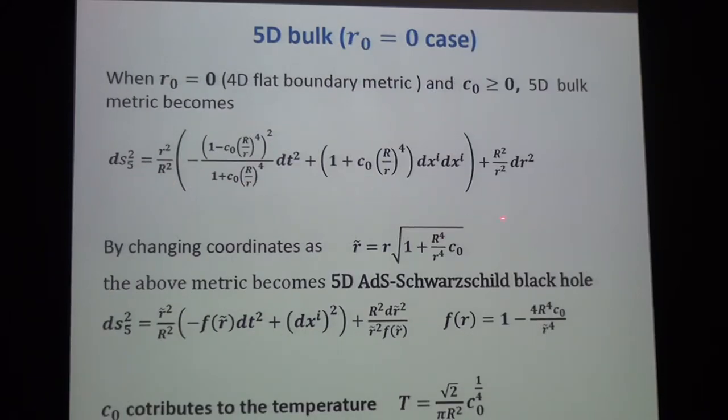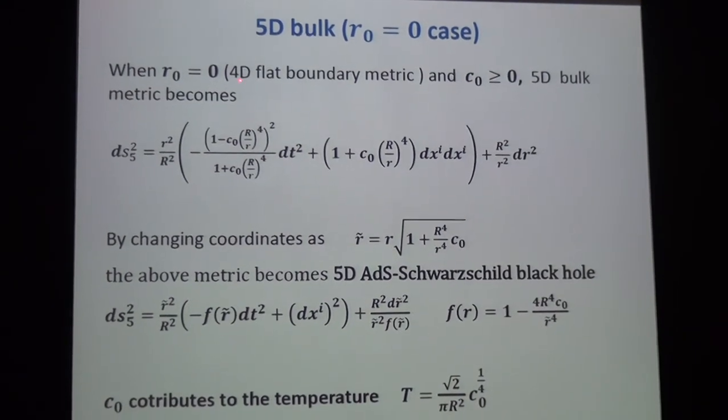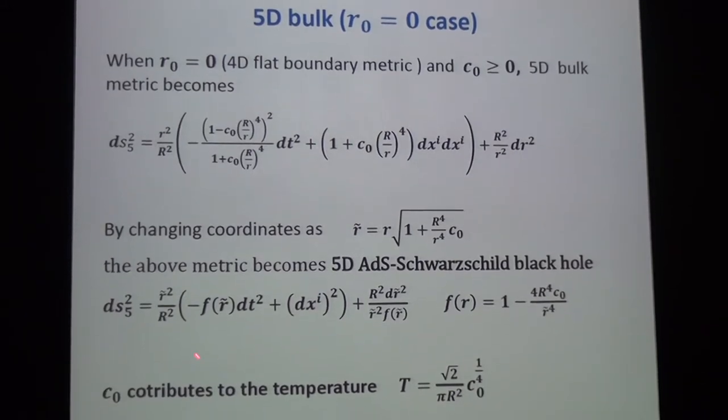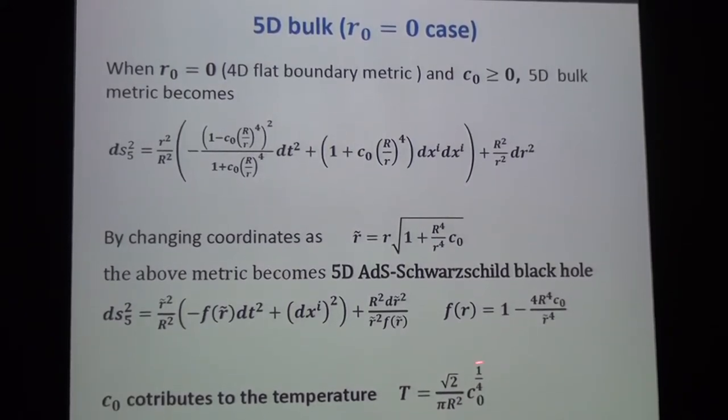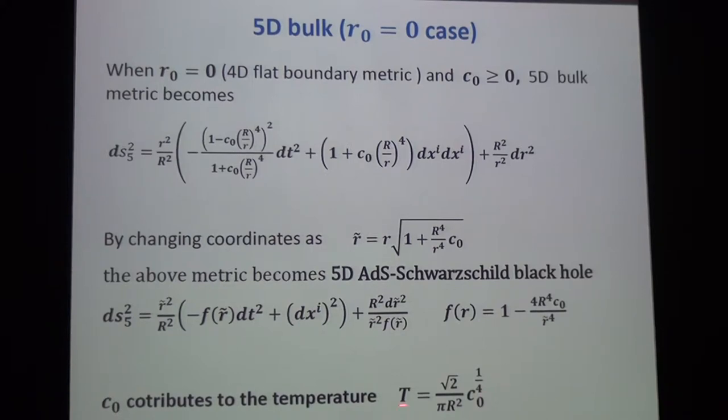To clarify the meaning of C_0, first I will consider when r_0 equals zero, namely when the four-dimensional boundary metric is flat. In this case, the five-dimensional bulk metric becomes like this. Actually, by changing the five-dimensional coordinates r to r^2 like this, the metric becomes the usual five-dimensional AdS black hole. Then we can obtain the temperature from C_0. So C_0 contributes to the temperature.